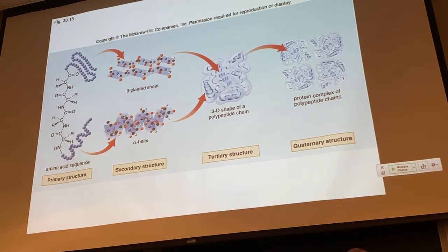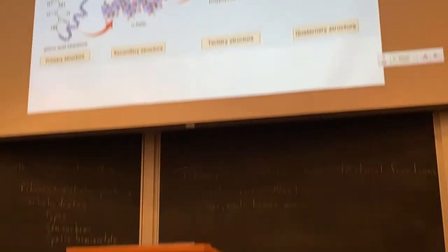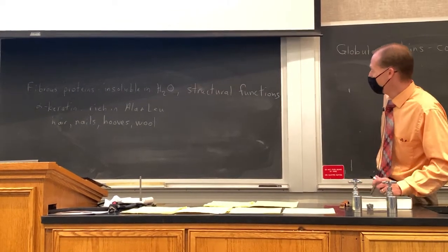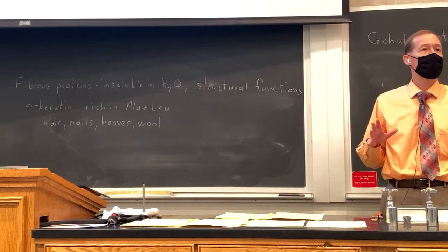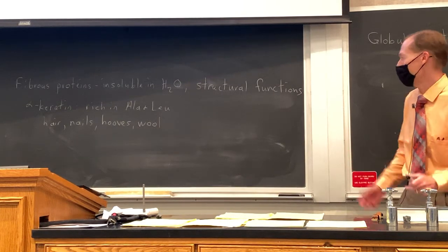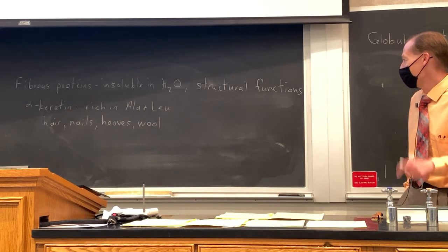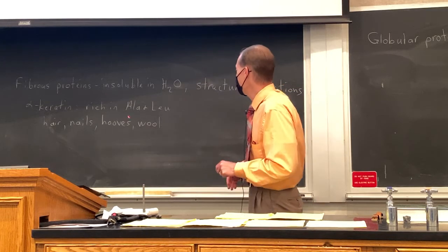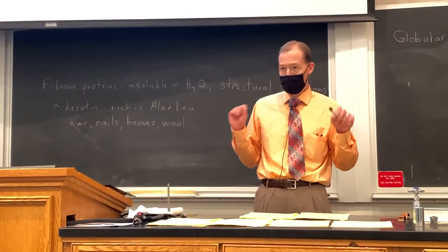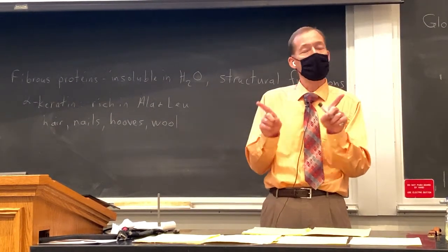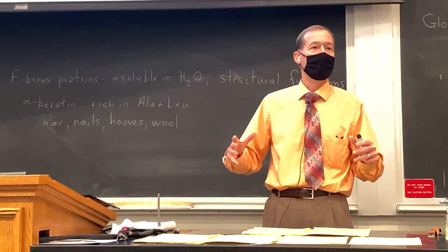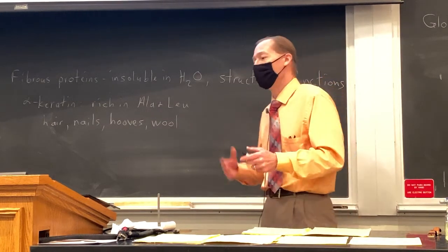We can classify proteins into two different categories according to their structure and solubility properties. The first is fibrous proteins. As the name suggests, they form fibers that are insoluble in water, so fibrous proteins tend to perform structural functions in nature. An example is alpha-keratin, which is made up of alpha helices rich in alanine and leucine. Those side chains point off the sides of the helices and are exposed on the surface, making it insoluble in water because it's only a hydrocarbon side chain.